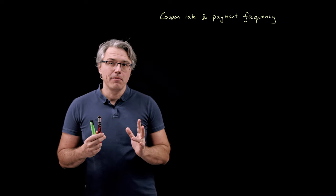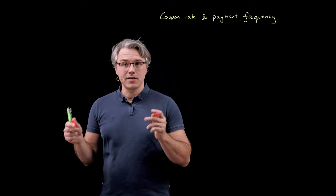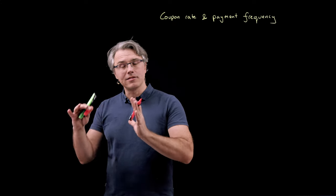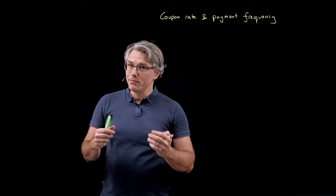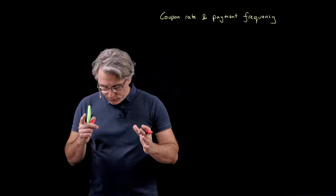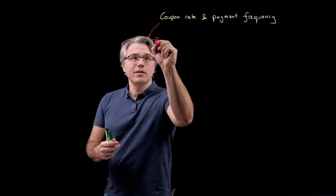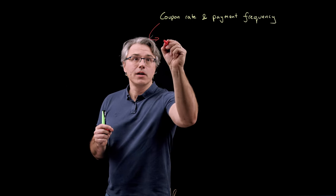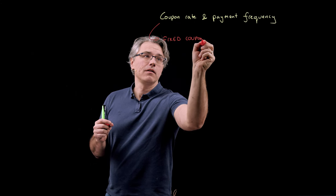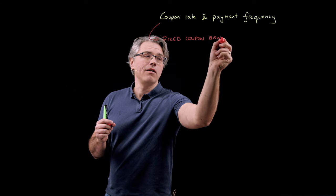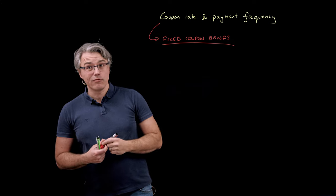Bonds typically come in two — actually three — varieties when it comes to the way the coupon is expressed. Remember the coupon is that systematic cash flow paid from issuer to investors, or maybe paid — it's not always paid. The first type is bonds that have a fixed coupon, so fixed coupon bonds. These are frequently issued by governments, municipalities, and corporations also.